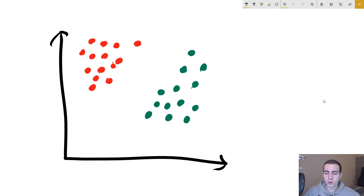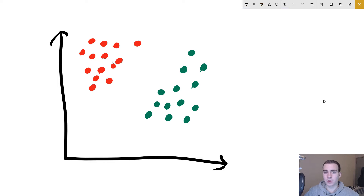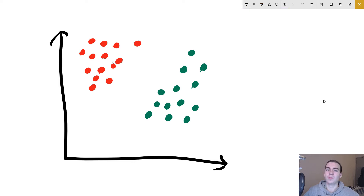Essentially, how SVMs work is they attempt to create something known as a hyperplane. A hyperplane is something that can divide your data using something that's straight — like a plane is straight, a line is straight, you can have four-dimensional stuff. So anything that's straight — a linear way to divide your data.